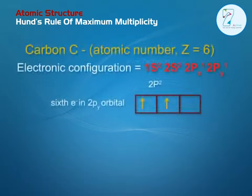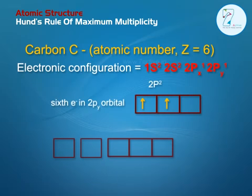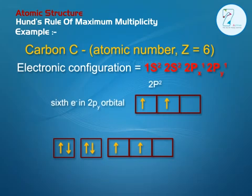Carbon (C): Atomic number Z is equal to 6. Electronic configuration is equal to 1s2, 2s2, 2px1, 2py1. The sixth electron enters in the 2py orbital.